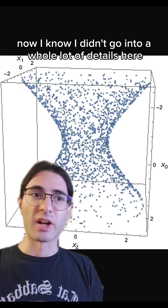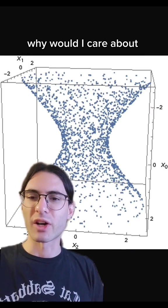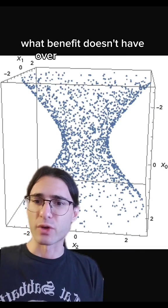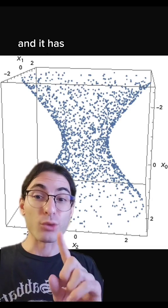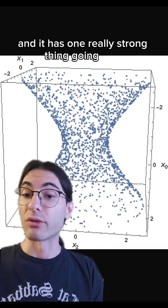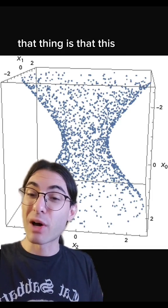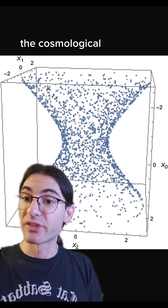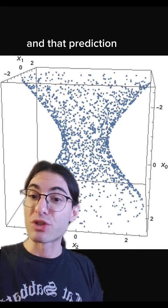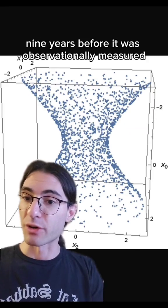Now I know I didn't go into a whole lot of details here, and you might be wondering why would I care about causal set theory? What benefit does it have over string theory or loop quantum gravity? And it has one really strong thing going for it. That thing is that this model actually predicts the cosmological constant of our universe, and that prediction was made like nine years before it was observationally measured.